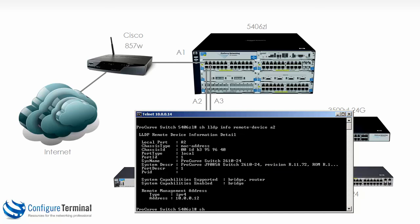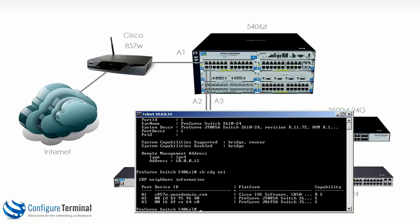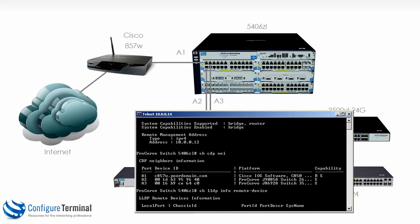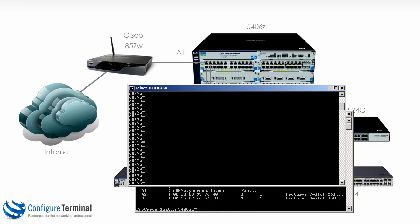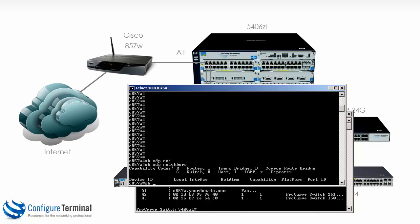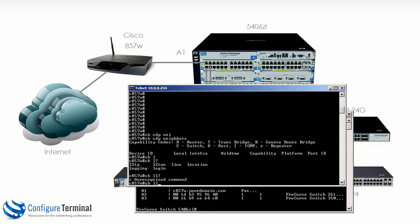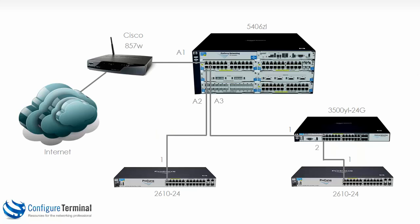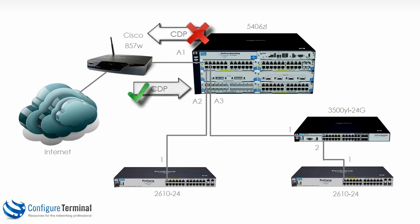On the 5406, 'show CDP neighbors' shows the Cisco router in the output, and 'show LLDP info remote device' also shows it. However, on the Cisco router, 'show CDP neighbors' shows no neighbors, and 'show LLDP' is not supported on this router. Cisco routers and switches support CDP by default, but not all devices support LLDP. HP switches can view Cisco switches and routers via CDP, but Cisco devices will not necessarily see HP switches, because HP switches only send LLDP updates — not CDP. Therefore, a neighboring device must be running LLDP to see HP switch information.